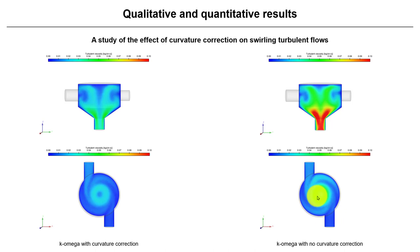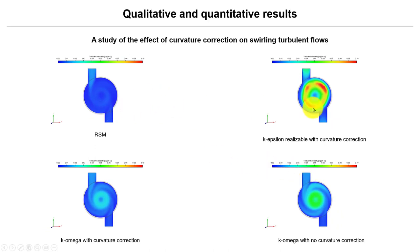So here we can appreciate better the influence of this correction on the system rotation. And again, well, Reynolds stress models.